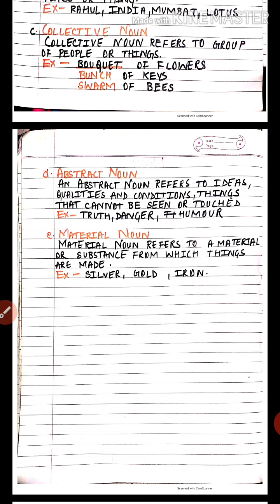More examples of abstract noun: truth, danger, humor. Truth, danger, and humor can all be felt or experienced, but we cannot see or touch them. That is why they all come under abstract noun.